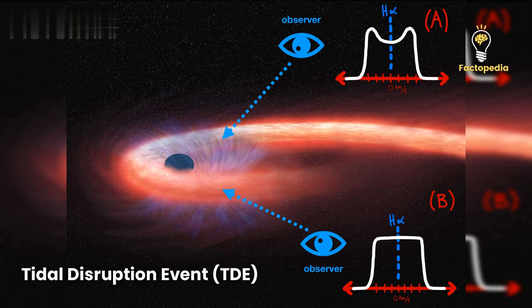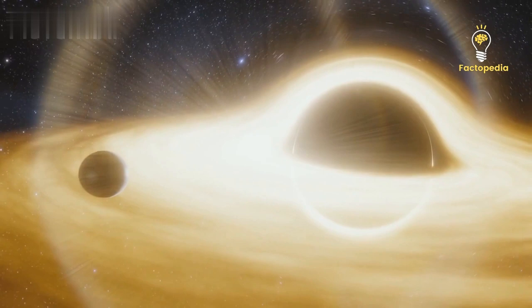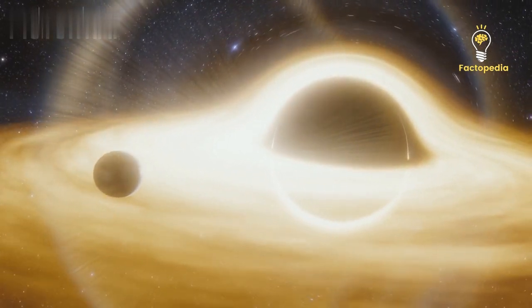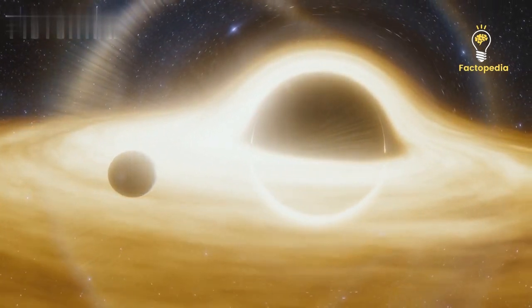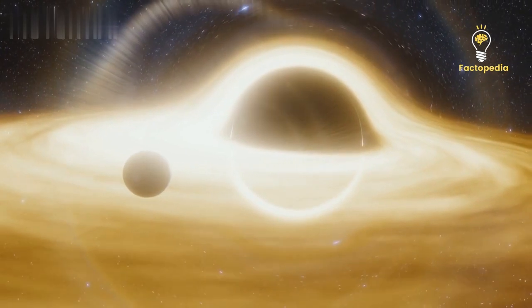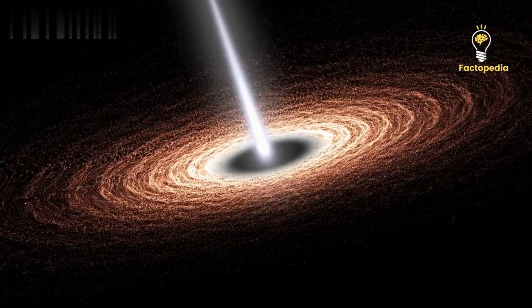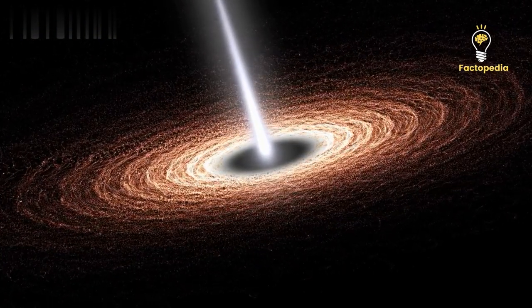During a TDE, a star passing too close to a supermassive black hole can get shredded by the black hole's intense gravitational forces. As the star's material is torn apart, it forms a swirling stream of hot gas that spirals into the black hole's accretion disk.